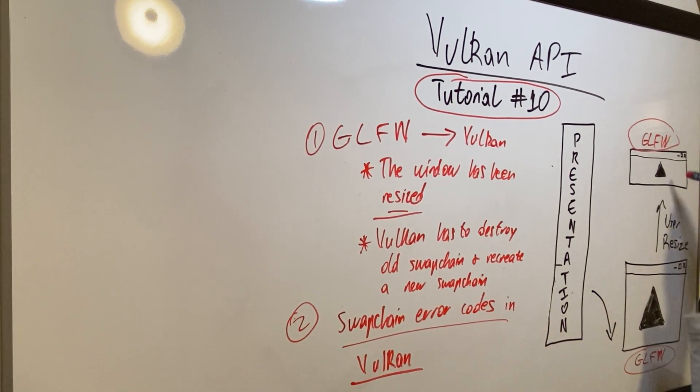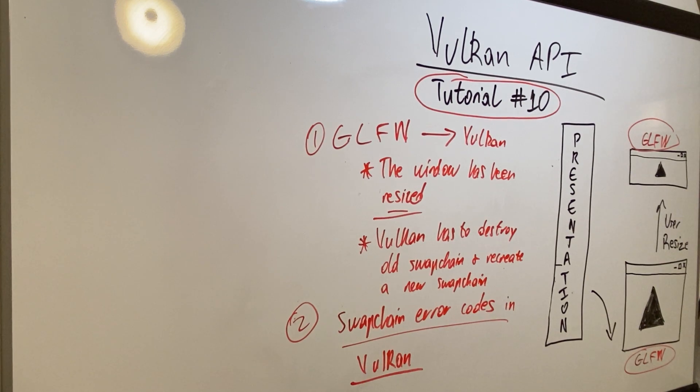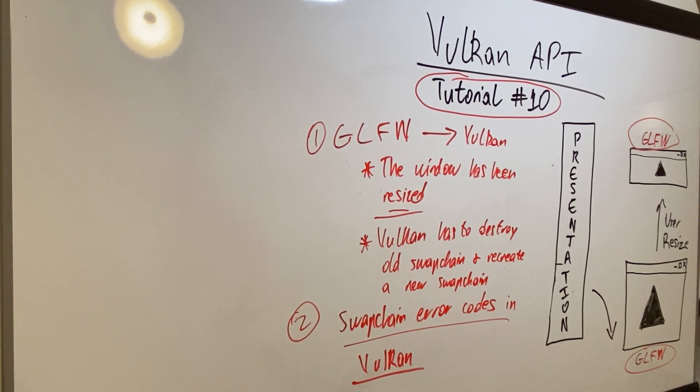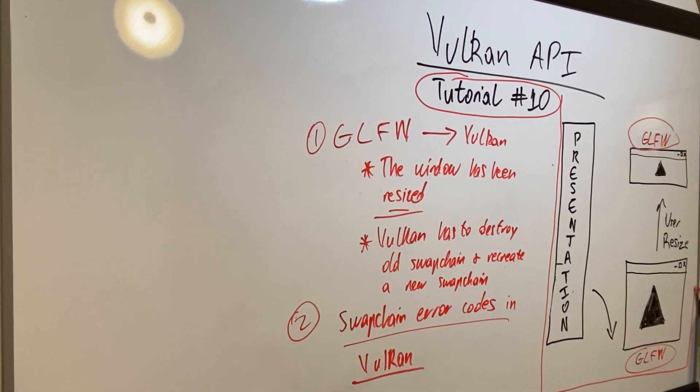There's also the situation where the person minimizes the window. When you minimize the window, you basically have a width and height of zero, and Vulkan also has to process that accordingly. Just understand that GLFW is concerned with windowing and this is the windowing system that is used by Vulkan to understand what's happening inside of presentation. This is all presentation.